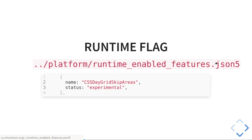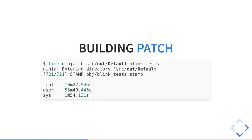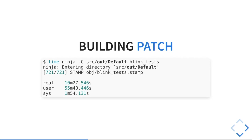When you're implementing something new, you don't want to just implement it in the browser so it appears in the next release. You usually do that behind a runtime flag. Adding a runtime flag is very simple — you just modify a JSON file and add it with status experimental. I called it CSS-day-grid-skip-areas for the runtime flag. Just building those two or three lines generates quite a lot of code from that JSON. It took 10 minutes to build here.